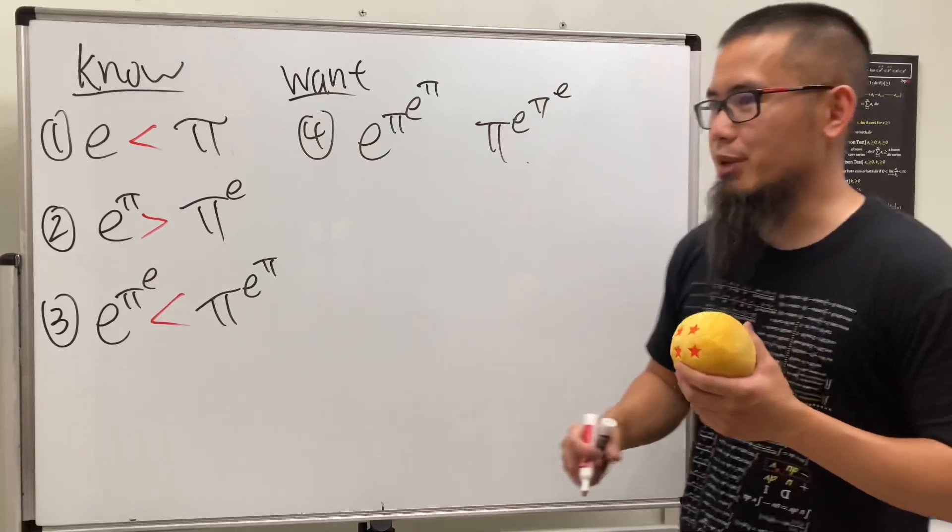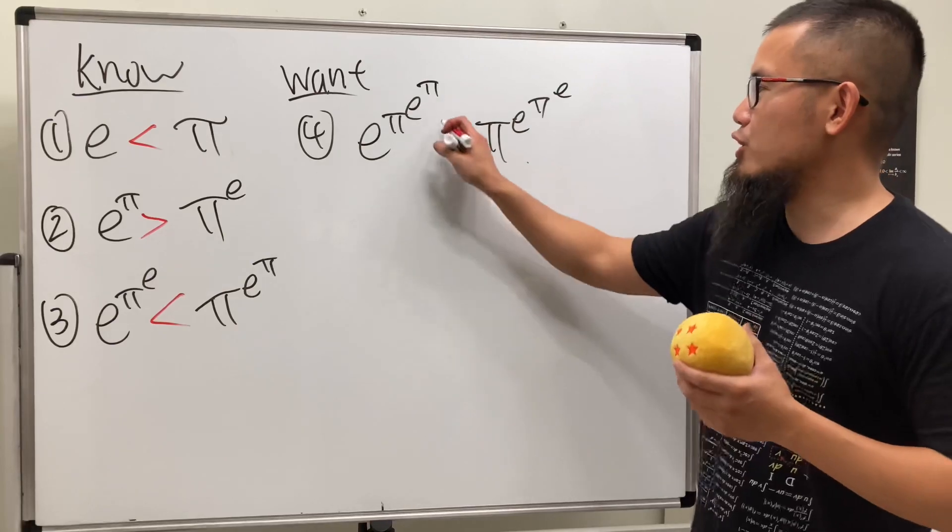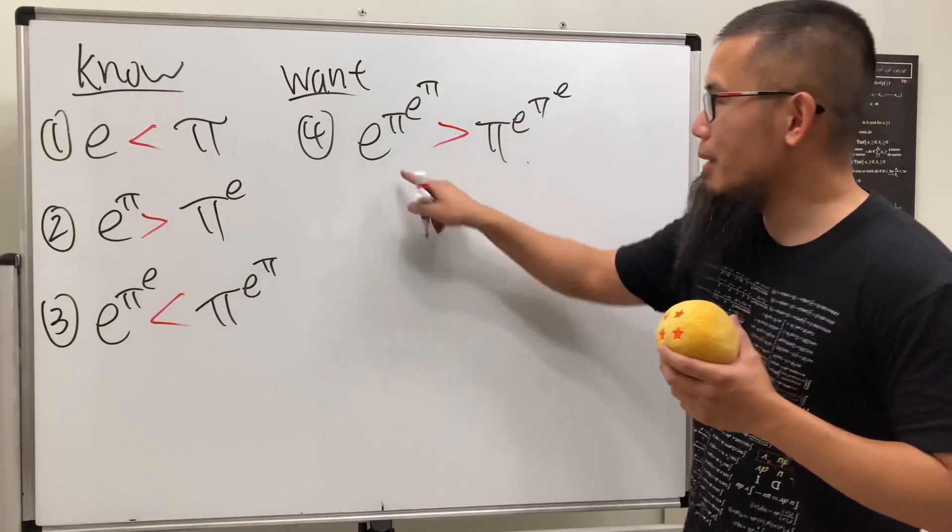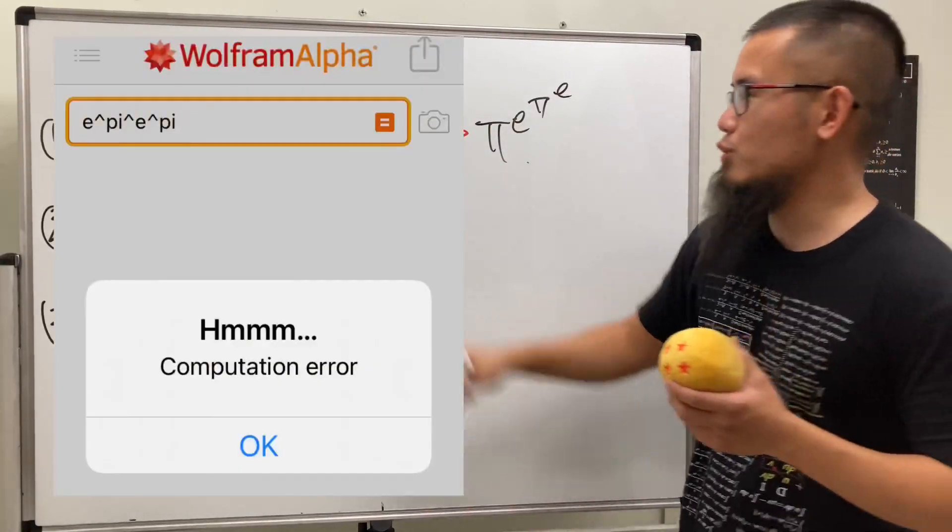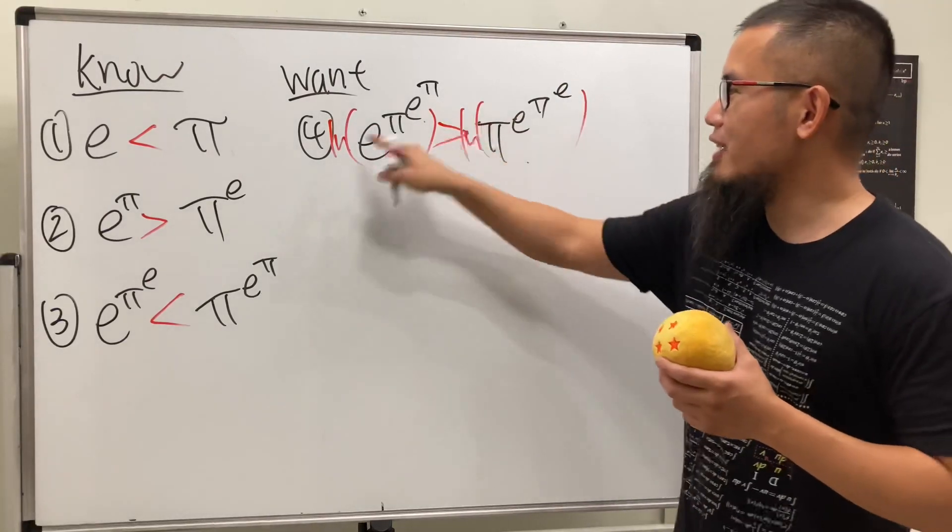I actually do not have a solution for you guys. I only have a calculator solution, okay, Wolfram Alpha solution. Technically this is going to be bigger. And do not enter this on Wolfram Alpha because it won't work. So what you should be doing is compare the ln values on both sides.